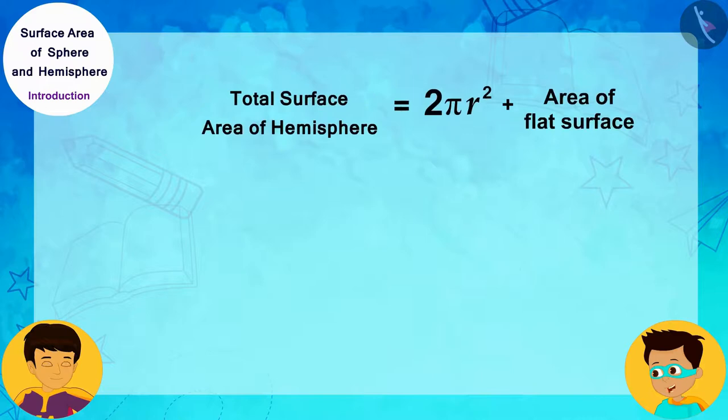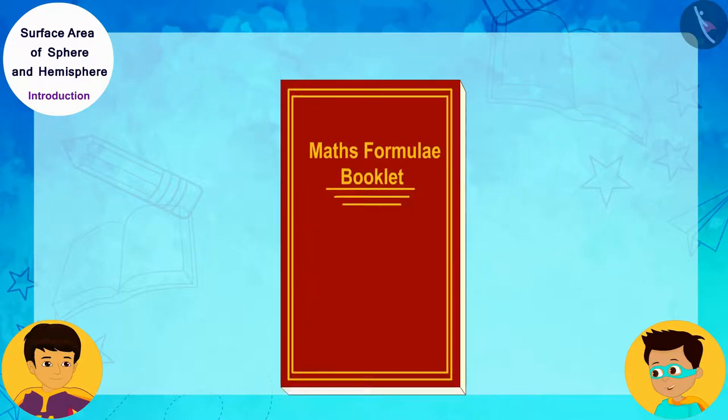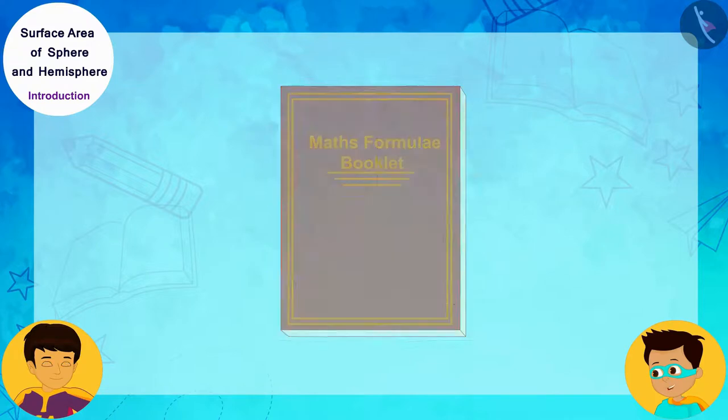And look, if we add the area of the flat surface to the curved surface area of the hemisphere, then we will also know the formula for the total surface area of the hemisphere. In this way, the total surface area of the hemisphere is the product of 3 pi and R square. Let me quickly write these formulae in the formula booklet.